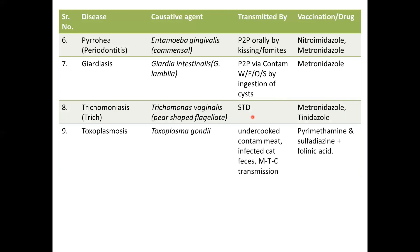Next is toxoplasmosis, caused by the protozoan Toxoplasma gondii. It is transmitted through the consumption of uncooked contaminated meat or via infected cat feces. It can also be transmitted from mother to child. The drugs that can be used are pyrimethamine and sulfadiazine along with folinic acid.